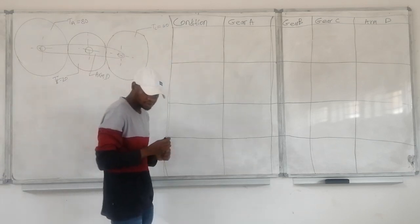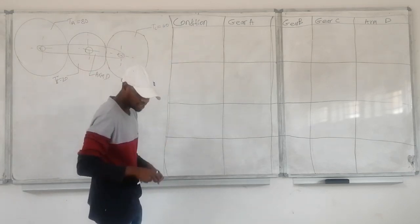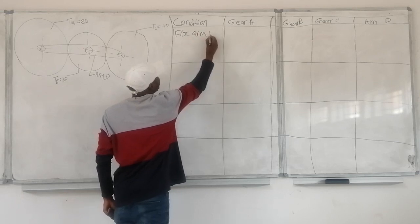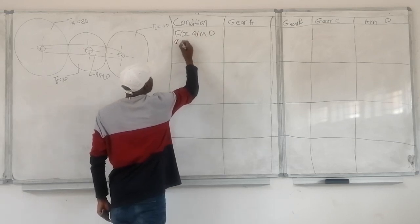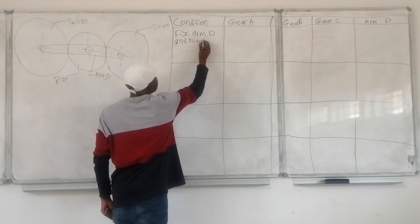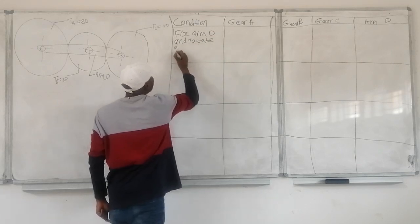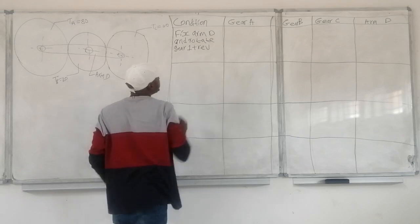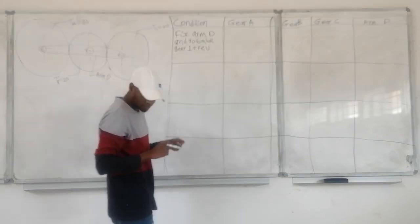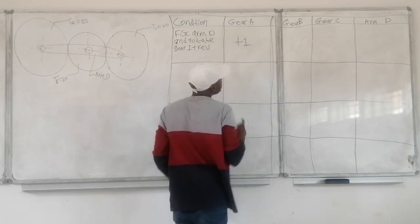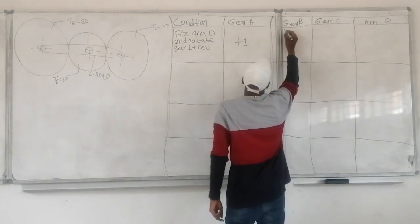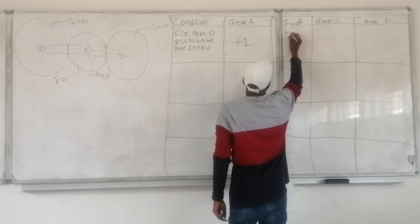After drawing this table, we are going to apply condition number 1, which is our first condition. We are going to fix arm D and rotate gear A one plus revolution. Here we are going to have plus 1, and here we are going to have our gear ratios, which is number of teeth of gear A over number of teeth of gear B.